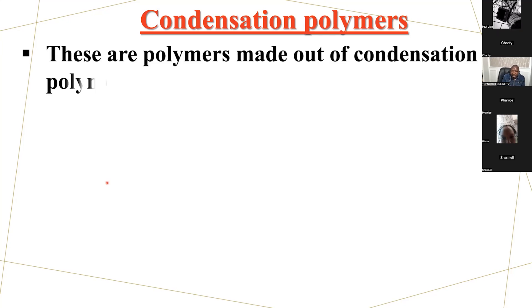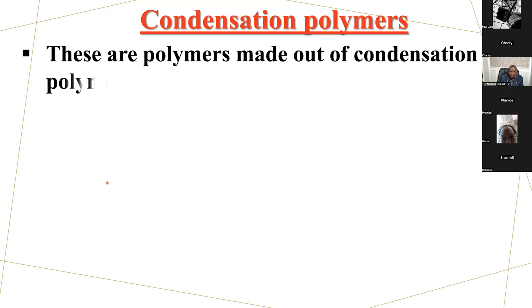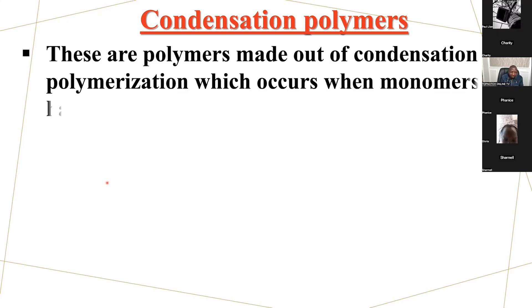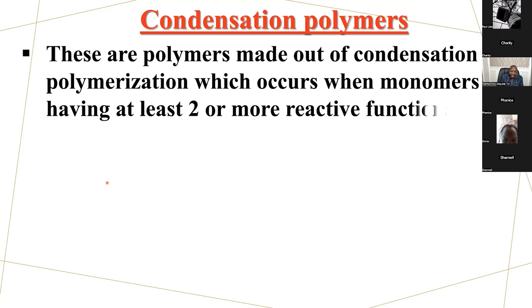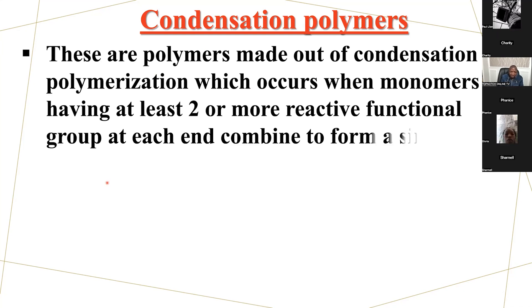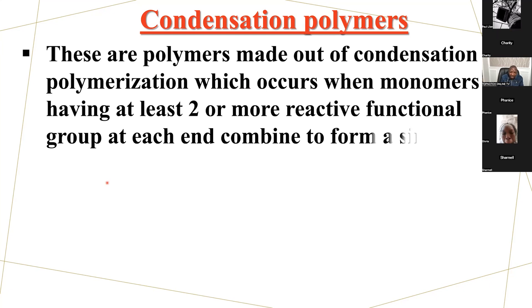This is condensation polymerization, which occurs when monomers having at least two or more reactive functional groups at each end combine to form a single large molecule with elimination of a simple molecule like water, ammonia, or alcohol. The major groups of condensation polymers are the polyamides and the polyesters.